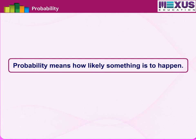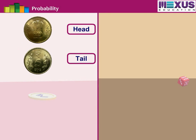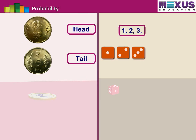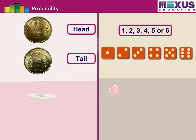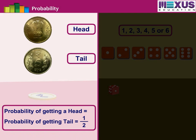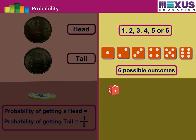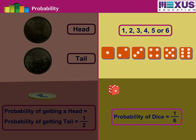Probability means how likely something is to happen. As we saw while tossing a coin, we get either heads or tails, and for rolling a dice, we can get 1, 2, 3, 4, 5, or 6. For a coin, head or tail is equally likely to be obtained, so the probability of getting head or tail is equal and is one-half. For a dice, the possibility of getting either 1, 2, 3, 4, 5, or 6 is equal — there are 6 equally likely outcomes, each with a probability of one-sixth.